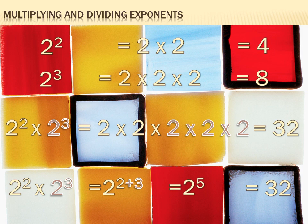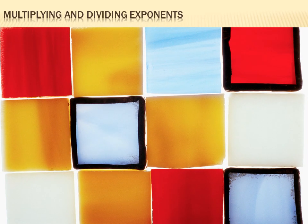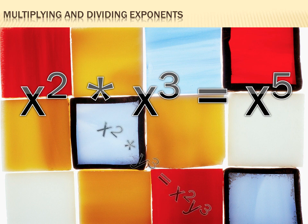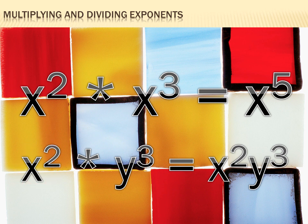This works with algebra as well. If I had x squared times x to the third, I'd just add my exponents — add 2 plus 3 — and my solution would be x to the fifth. But don't get confused: if I had x squared times y cubed, I can't combine my exponents because I don't have like terms. I can't combine x and y because I don't know what they are, so x squared times y cubed just stays as x squared y cubed.